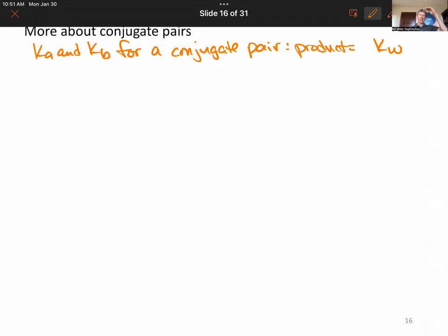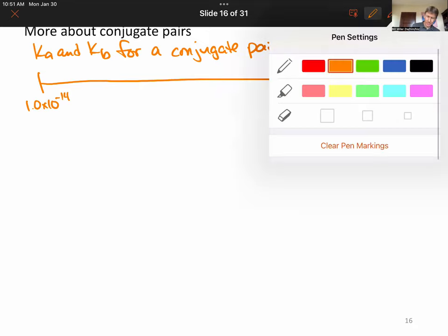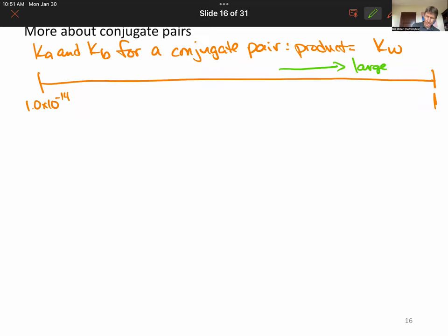So if Ka is larger, let's say this. So here's 1.0 times 10 to the minus 14 and here's 1. And we will only do this for weak acids. All of our Ka and KB values will be less than 1. So if we have a larger Ka, its conjugate will be smaller. Or a larger Ka conjugate base KB will be smaller.